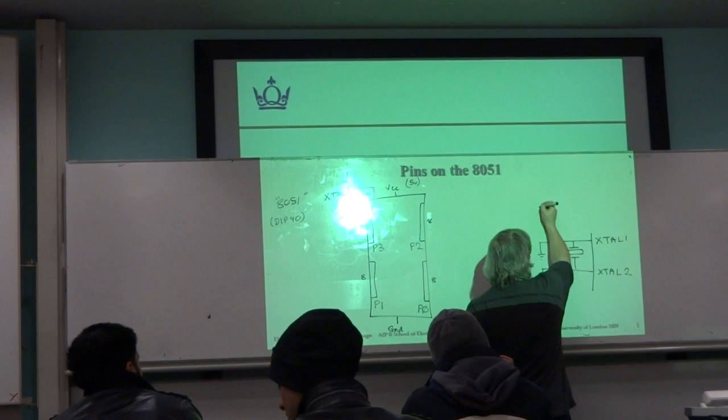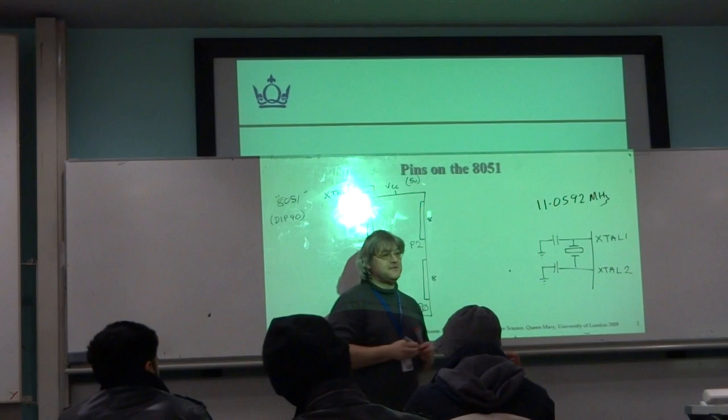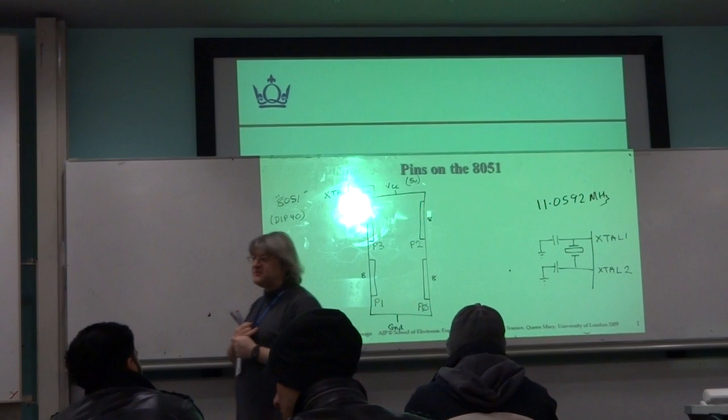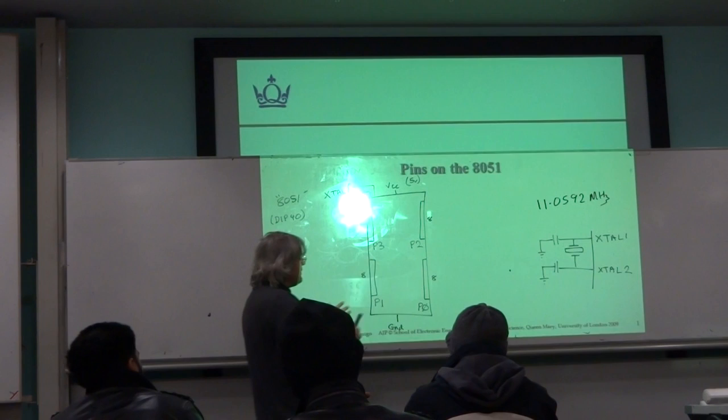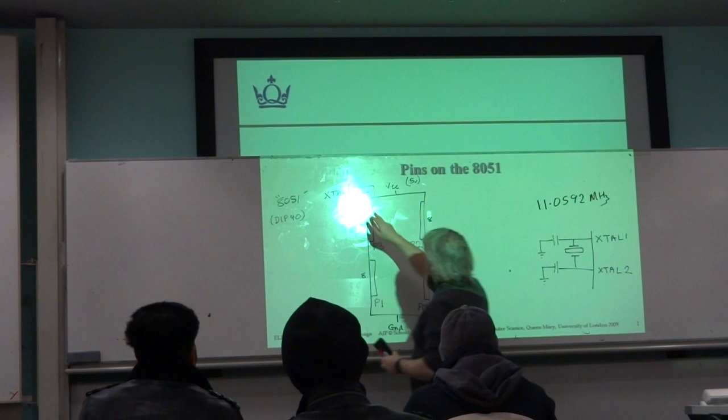You'll often find, and I'll be coming back to this in four weeks anyway, one crystal that's quite often used is 11.0592 megahertz. It seems an absolutely bizarre speed, but actually, that particular frequency, when you do divide it down by two a number of times, you end up with all the standard baud rates you'd recognize, like 9,600 baud, 19,200, and all those kinds of things. So if you want this to connect to like a PC through a serial interface, then that would be a good choice of crystal to use.